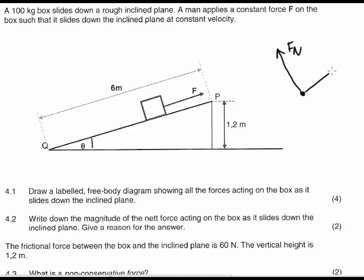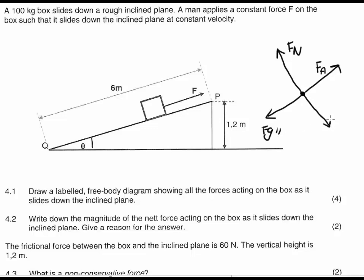Up the slope we have the force applied by the man, which I'm going to call F applied. We also have the force due to gravity, which you can either show as a force directly downwards, or split into its components: FG parallel (parallel to the surface) and FG perpendicular. We also have a force of friction, and remember that friction always acts in the opposite direction to motion, which means here friction is going to be up the slope as well.